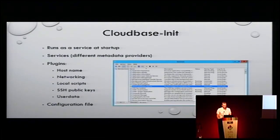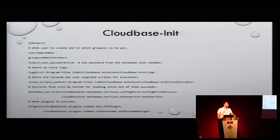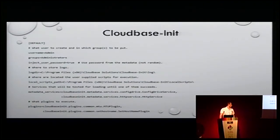This is how it runs: it's a normal service, and after it runs it detects the metadata provider. Using that loaded service, it uses some plugins to configure the instance — things like hostname, networking, local scripts. It can execute scripts on that machine and also store SSH public keys. It also relies on a configuration file where you can specify a username, groups, where to store logs, which metadata services you want to use in particular, and also the plugins. If you don't specify them, all of them will get executed.